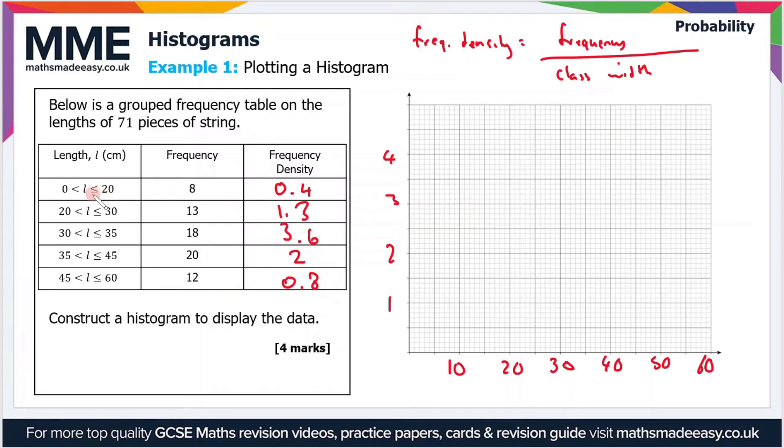Now all that is left is to plot the bars of the histogram. For the first one, the length category is from 0 to 20, so the bar width is going to go from 0 to 20, and the frequency density is 0.4.